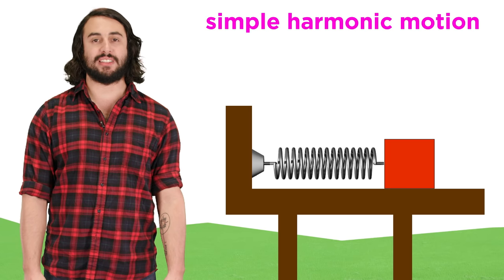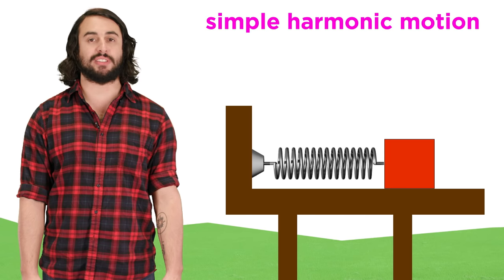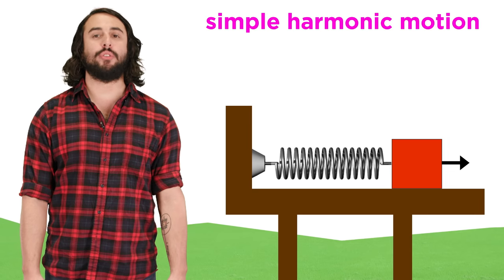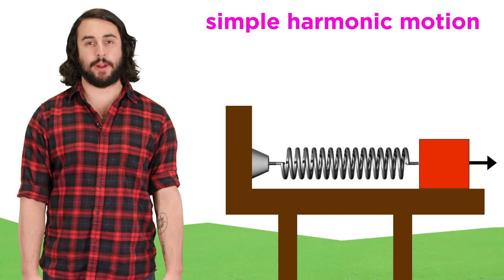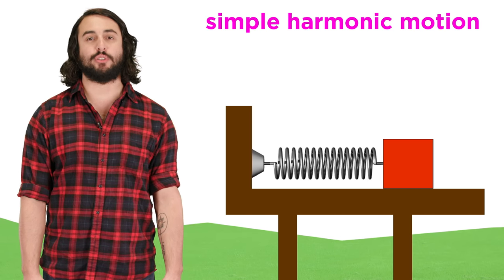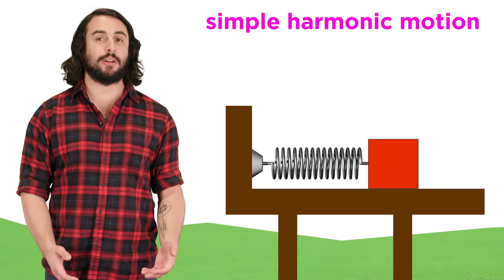Say we have a spring that is attached to some stationary surface, and on the other end of the spring there is a block of a particular mass. If we pull this block so as to expand the spring, and then we release the block, it will vibrate back and forth between more compressed and less compressed states.